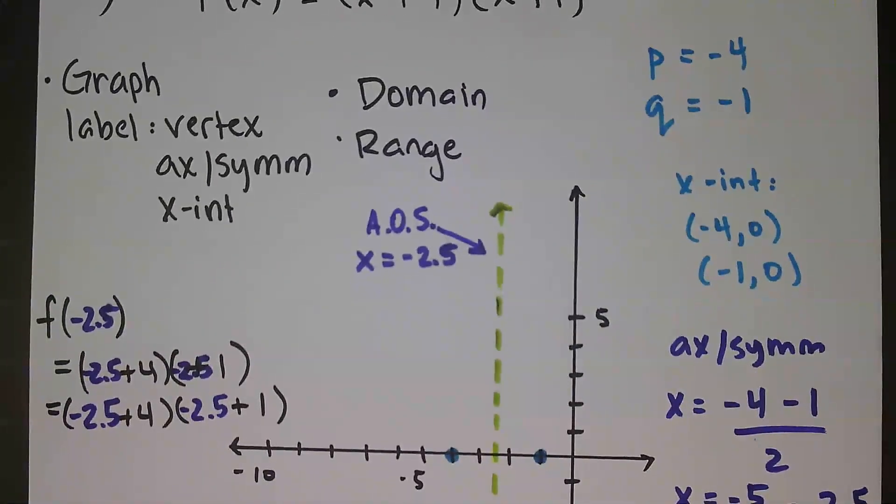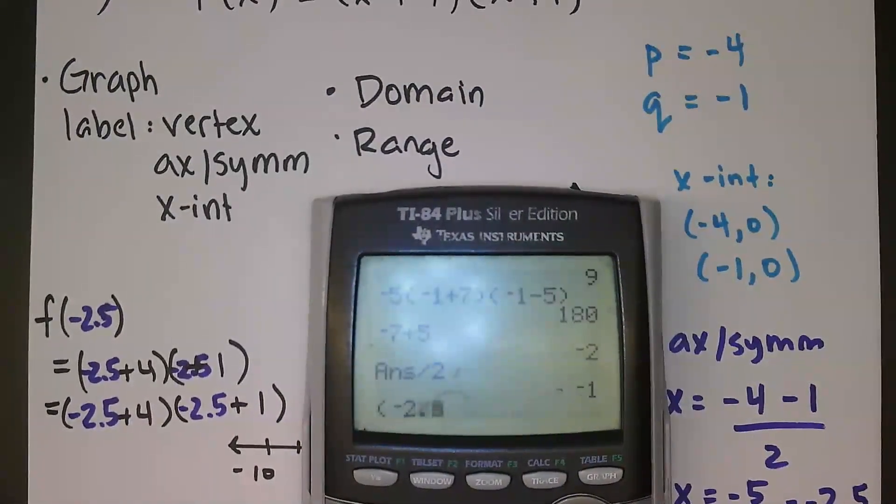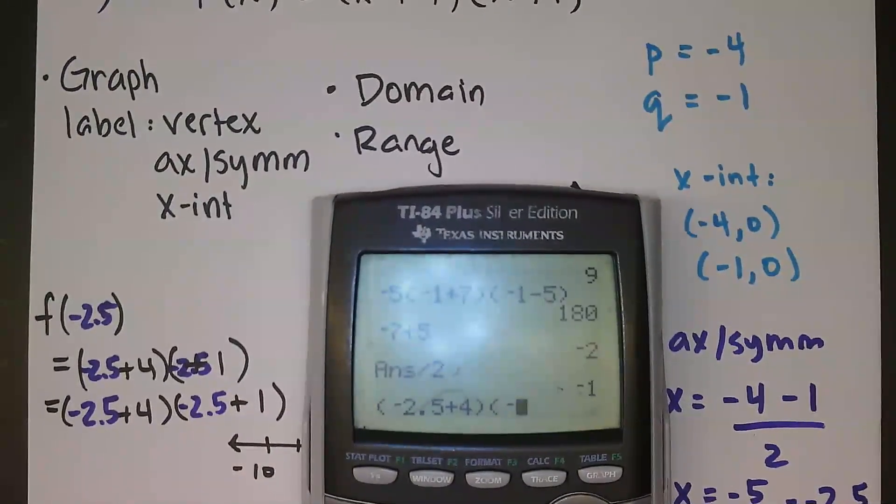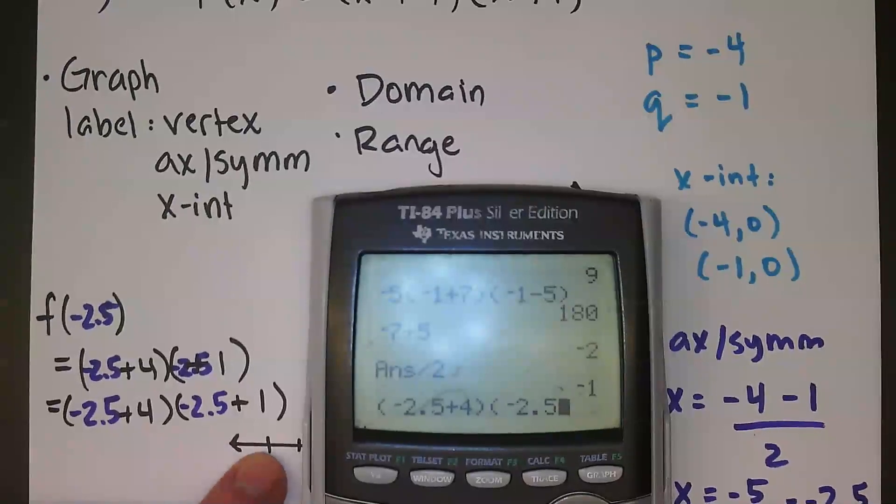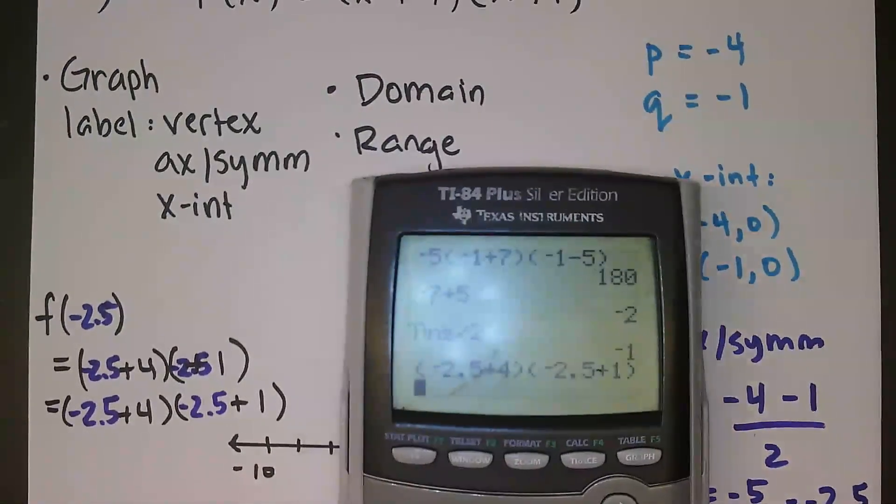I'll type that in. So we're going to do negative 2.5 plus 4 times negative 2.5 plus 1. And we can see that there.